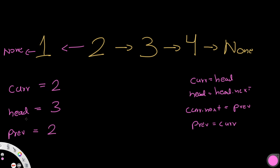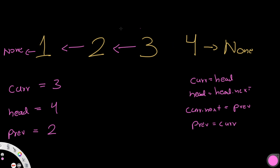Third iteration: current becomes three, the value of head. Head moves to four. Then current.next — three — is pointed to the previous element, which is two. So three points to two, and the old connection breaks off. Then we update previous to be equal to current, which is three.